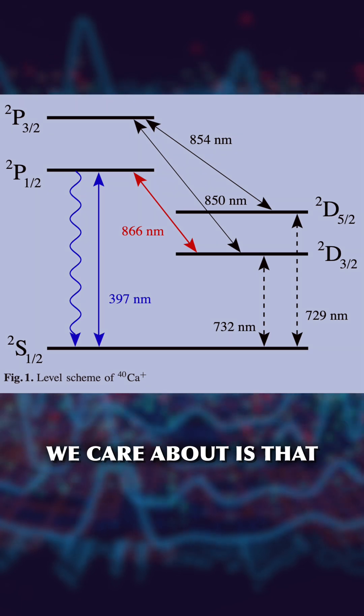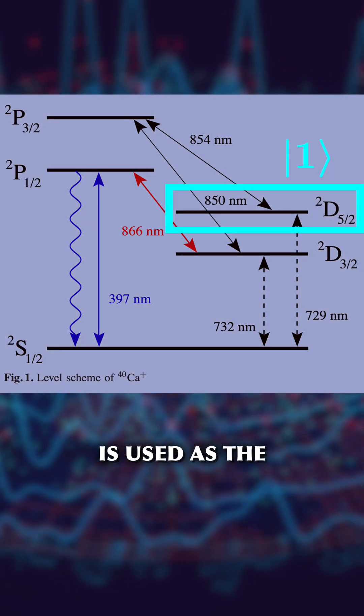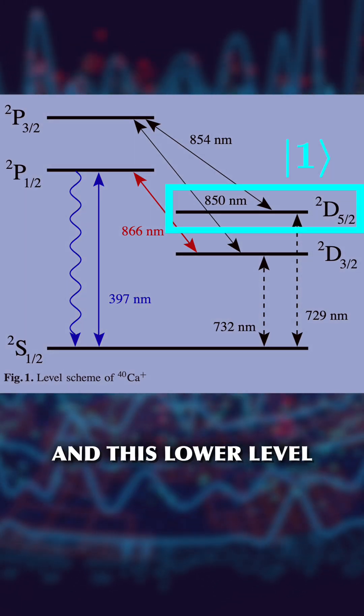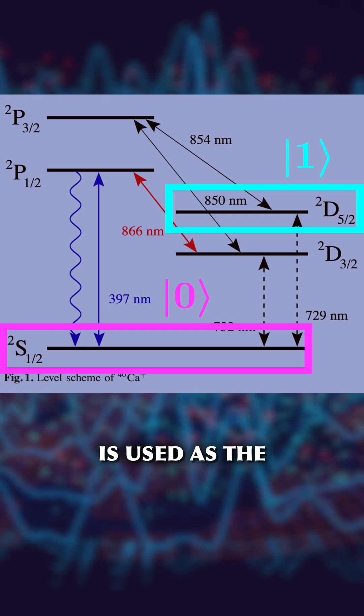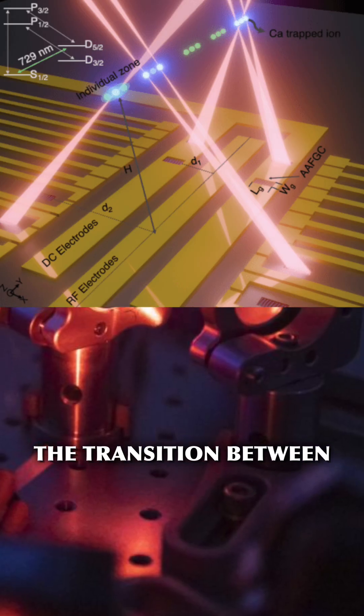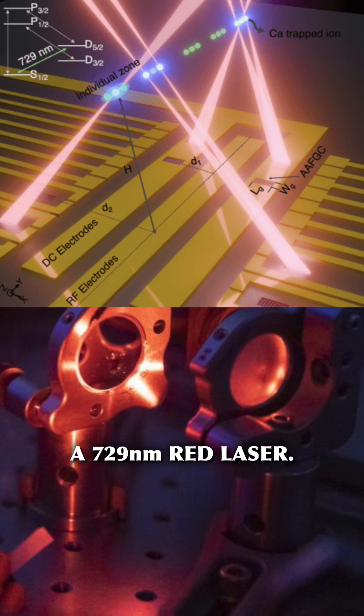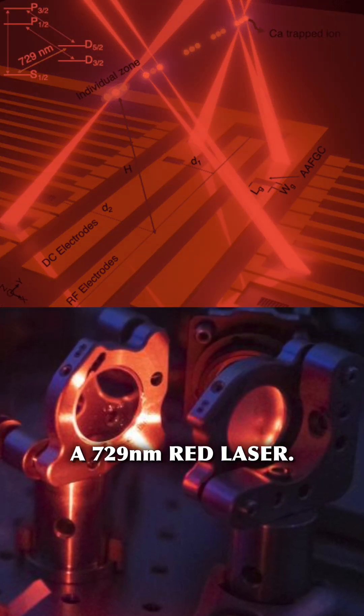The only thing we care about is that this upper level is used as the one qubit state and this lower level is used as the zero qubit state. The transition between those states can be triggered by a 729 nanometer red laser.